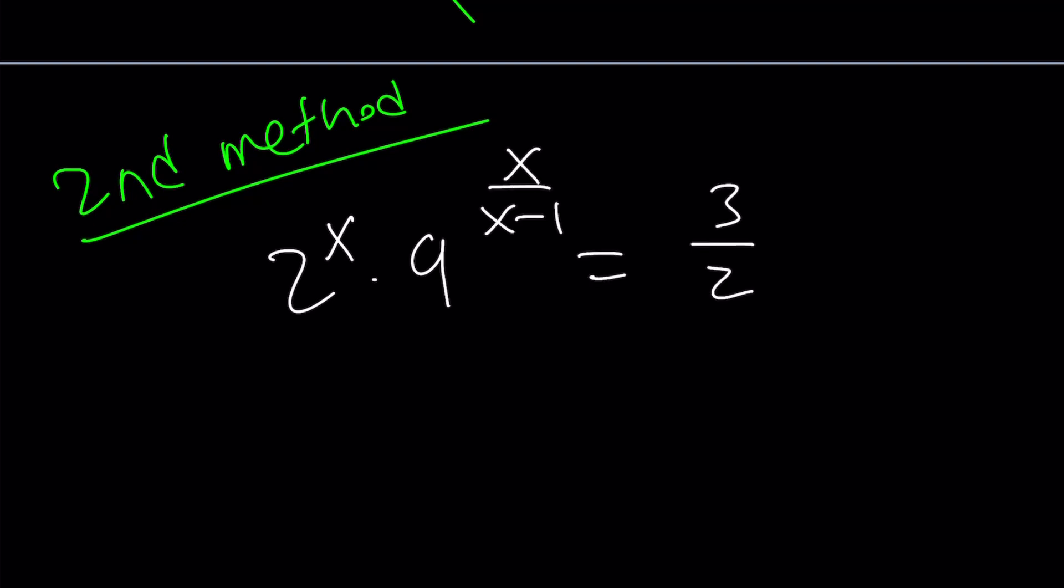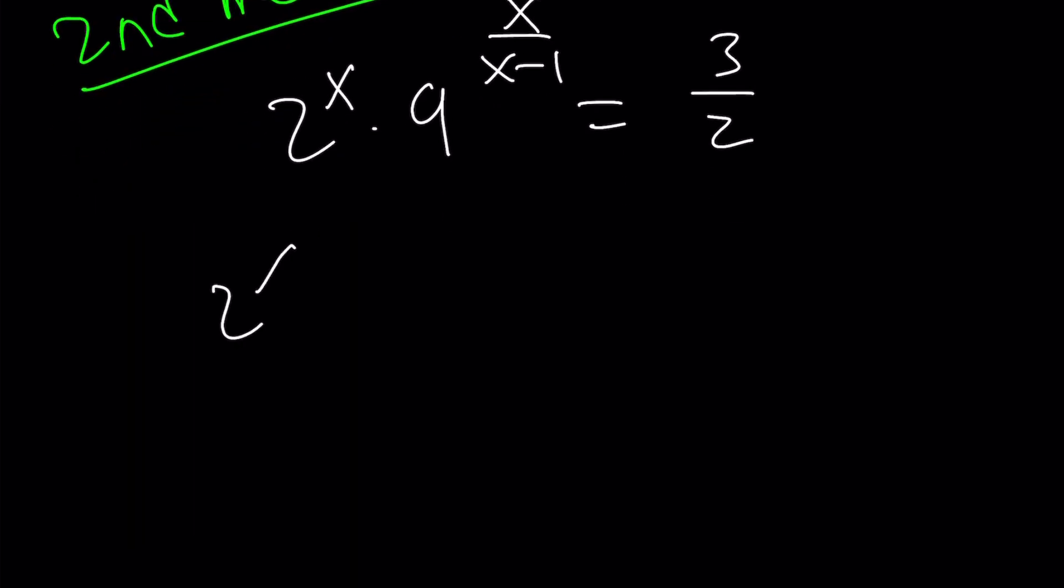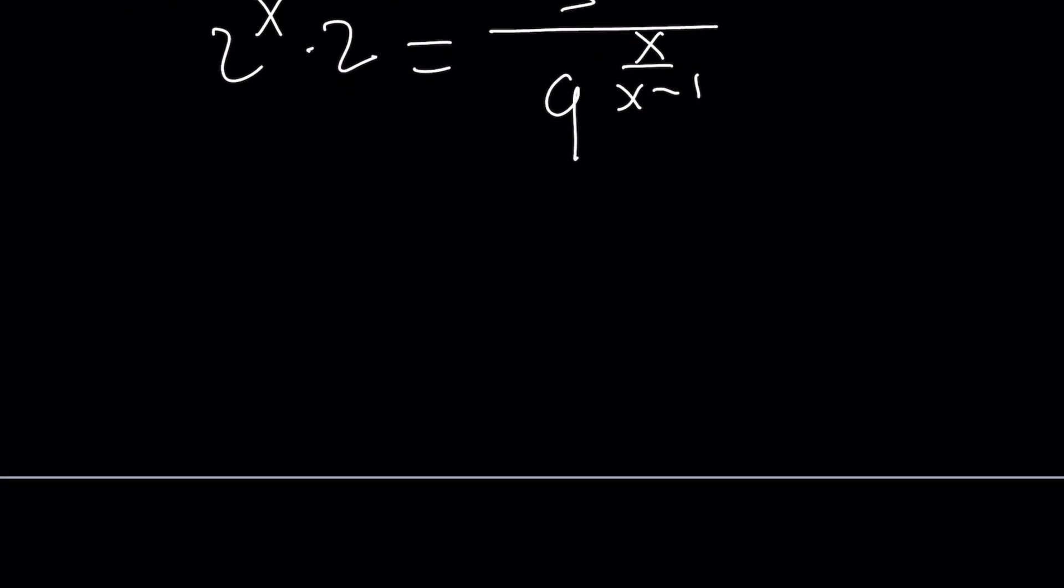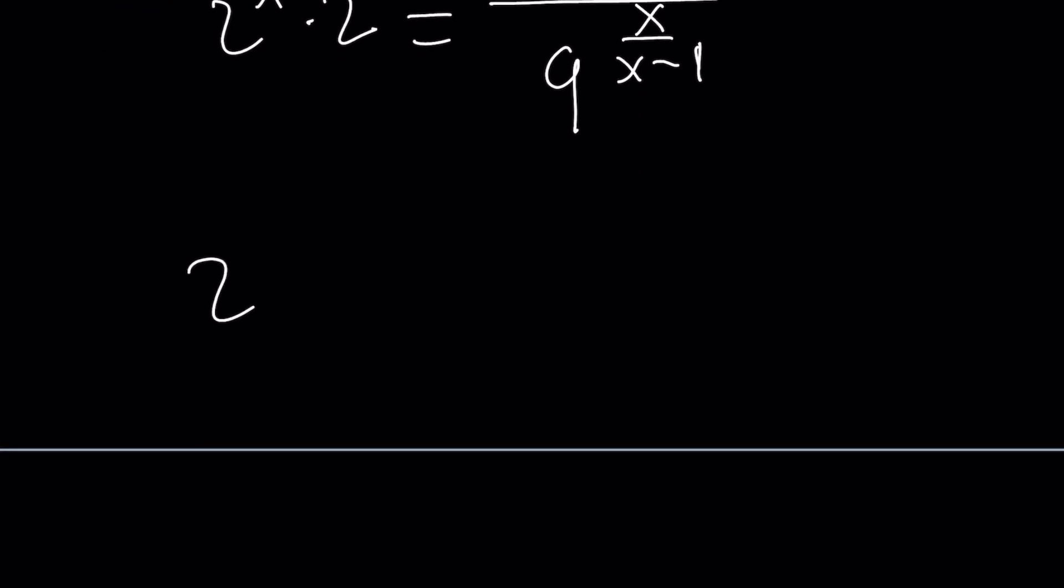So those are going to be the solutions. Let's go ahead and look at the second method real quick because second method is real quick. So to keep a long story short, we can write our equation. First, let me give you the original problem one more time. We can go ahead and write this as 2 to the x times 2 equals 3 divided by 9 to the power x over x minus 1.